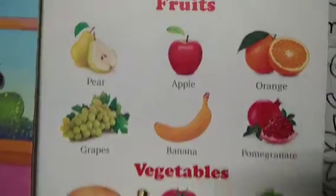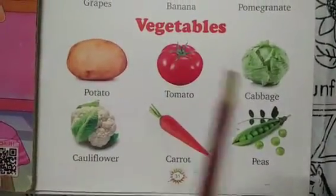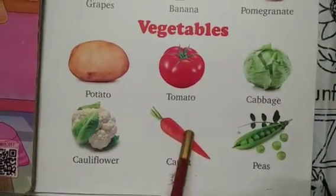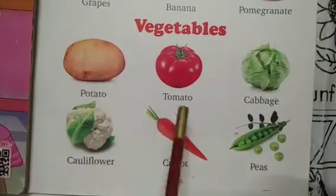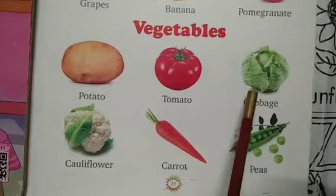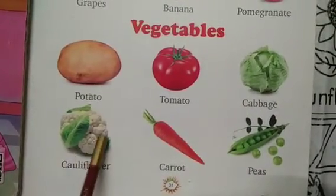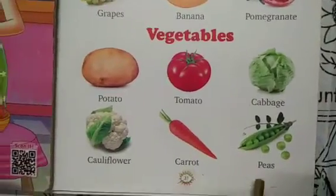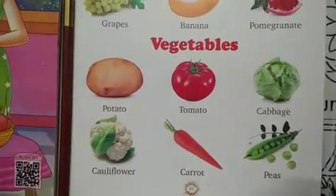Vegetables. P for potato — potato is brown in color. T for tomato — tomato is red in color. C for cabbage — cabbage is green in color. C for cauliflower — cauliflower is white in color. C for carrot — carrot is red. P for peas — peas is green. Okay, thank you.